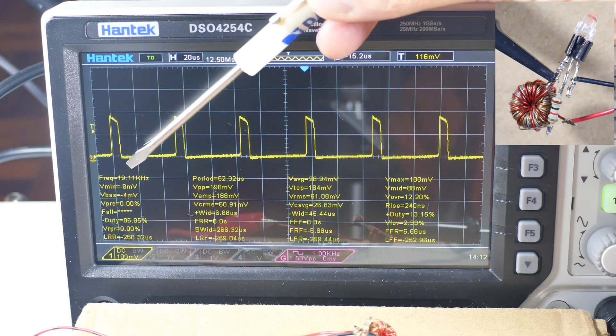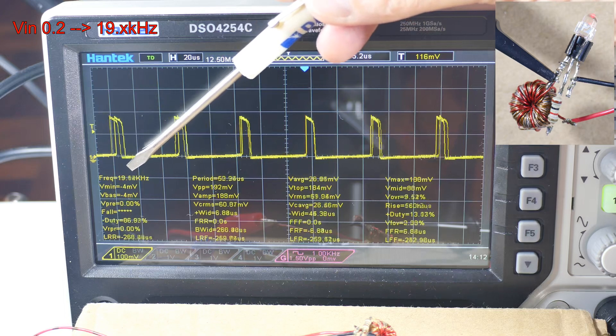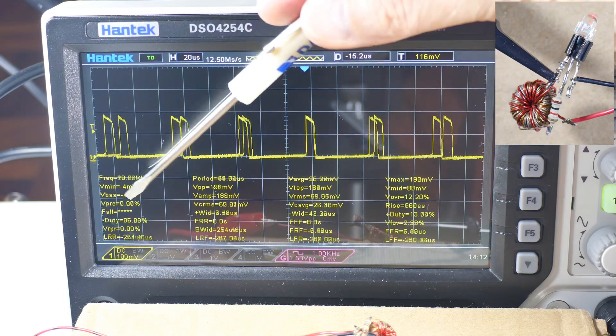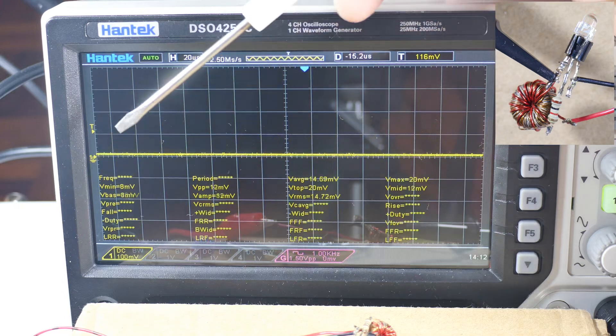This is 0.2 volts. It's jumped up to about, let's call it 19, roughly 19 kilohertz. And the duty cycle has gone up to 86%. And there's 0.1 volts and it collapses.